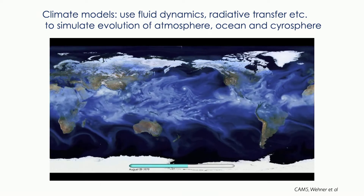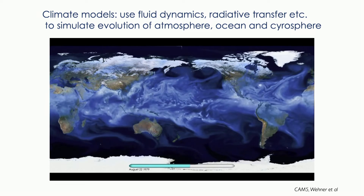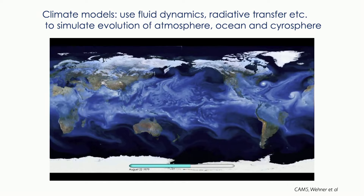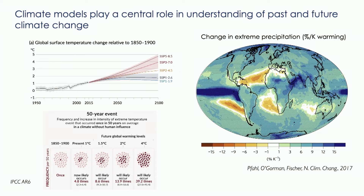So what are climate models? Probably many of you have seen output from them. Basically, they use fluid dynamics, radiative transfer, other physical laws, and so forth to simulate the evolution of the atmosphere, ocean, and cryosphere. You can see from that simulation they're basically simulating the weather as well — cyclones, anti-cyclones, and so on. We can look at climate as the long-term statistics, and see how it has changed in the past or will change in the future given certain emissions. Climate models play a central role in our understanding of ongoing climate change, together with observations and theory.